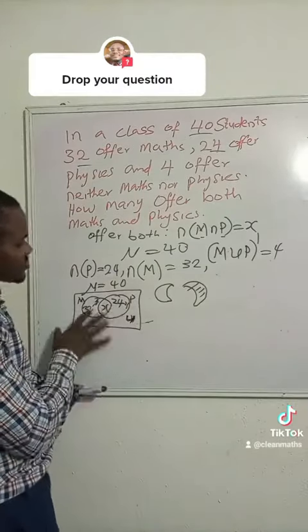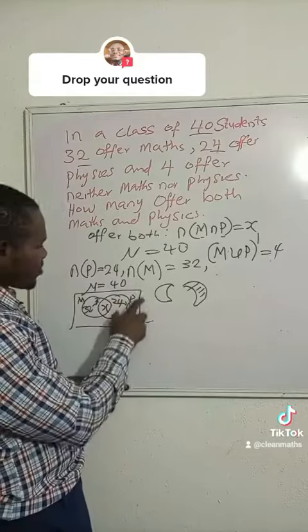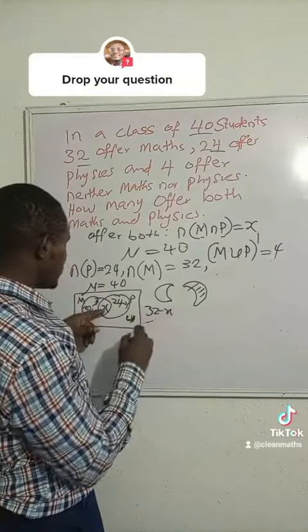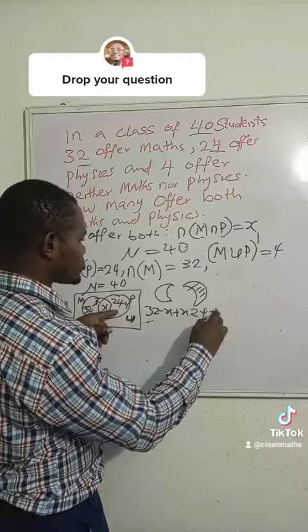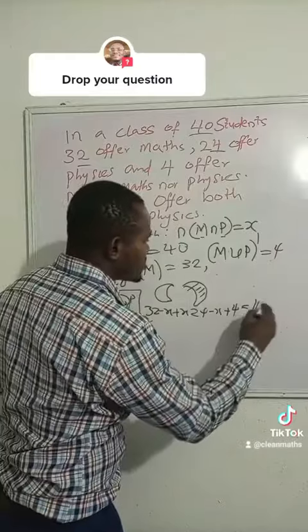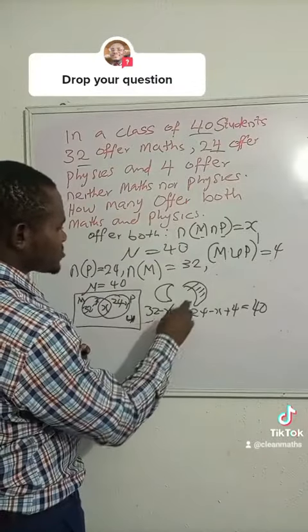Now, the total number of students here is 40, so what we need to do is sum all the students to equate it to the universal set. So we have 32 minus x plus x plus 24 minus x plus 4, and we are told that the total number of students in class is 40, is equal to 40.